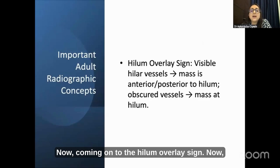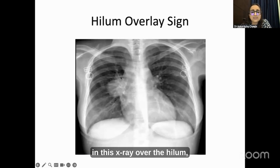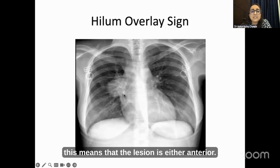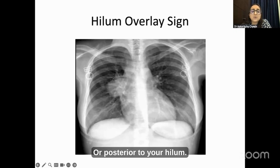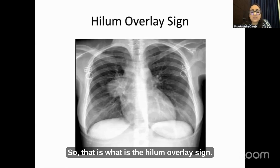Coming on to the hilum overlay sign — when you see visible hilar vessels over the hilum in an X-ray, this means that the lesion is either anterior or posterior to your hilum. If these vessels were not visible, that means your lesion is over the hilum. That is the hilum overlay sign.